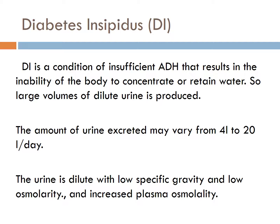Diabetes insipidus is a condition caused by a deficiency of production or secretion of ADH, or a decreased renal response to ADH. ADH deficiency results in the excretion of large volumes of dilute urine, leading to polyuria. The amount of urine excreted may vary from 4 liters to 20 liters per day, resulting in fluid and electrolyte imbalances caused by increased urine output, decreased urine osmolality, and increased plasma osmolality.